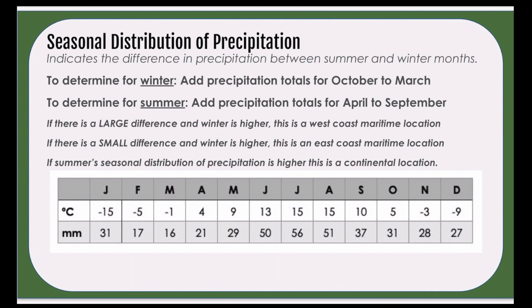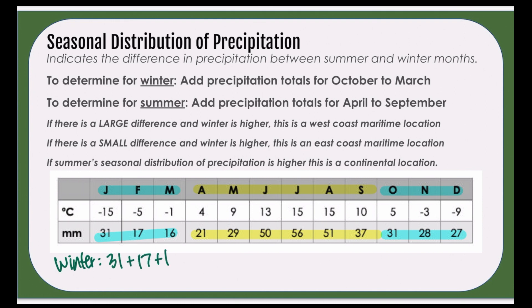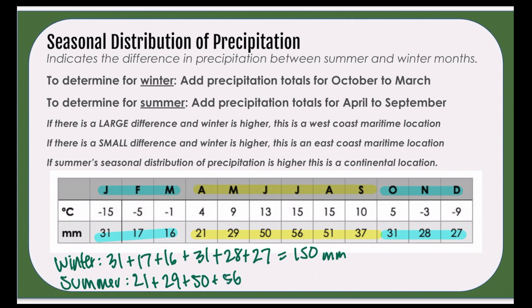For seasonal distribution of precipitation, we're looking at the amount of precipitation in our winter months versus our summer months. Our winter months are January to March and October to December. Our summer months are April to September. For winter, we're going to be adding 31 plus 17 plus 16 plus 31 plus 28 plus 27, which gives us a total of 150 millimeters. For summer, we're adding 21 plus 29 plus 50 plus 56 plus 51 plus 37, which gives us a total of 244 millimeters.